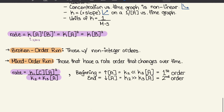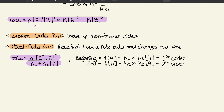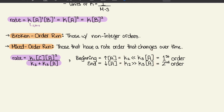Broken order reactions are those with non-integer orders. Mixed order reactions have a rate order that changes over time. We don't need to calculate these on the MCAT, but know that at the beginning with high concentration of A, since rate order changes over time, we get different K values. Initially, K2 is significantly less than K3 times [A], giving first order behavior. At the end, as reactants are used up and [A] decreases, K2 becomes significantly greater than K3 times [A], giving second order behavior.